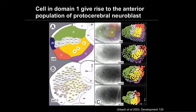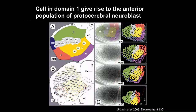So what is domain 1? Because it is at the mid-blastula transition and there's a real lack of markers we can use, I turned to the literature and work from Gerhard Technow's lab. He painstakingly mapped out the cell fate of all neuroblasts developed in Drosophila. It turns out domain 1 gives rise to the anterior portion of the Drosophila adult brain. We can think of domain 1 cells as pro-neuronal cells.